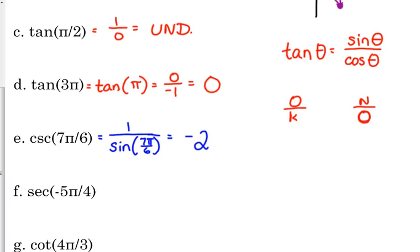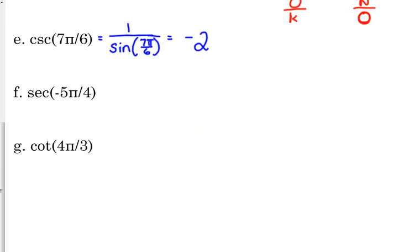All right. Secant. Secant goes with cosine. I'm just going to write it below it because I want to look at it from the perspective of flipping it over instead of putting 1 over the number. You get the same result. It's just a little bit easier to just flip it over. Negative 5π over 4. What did I tell you to do with negative angles? Find the positive angle.